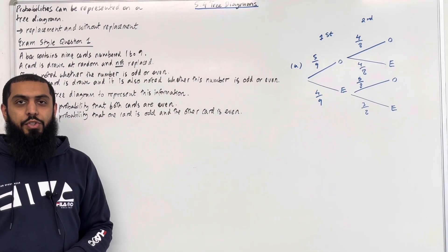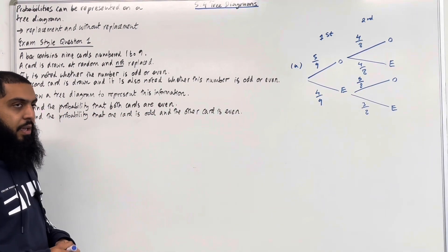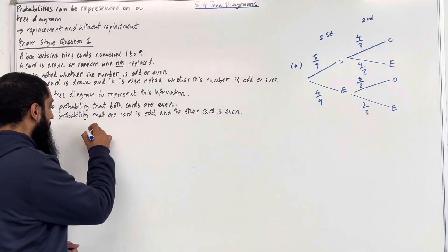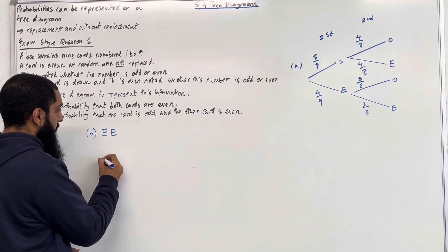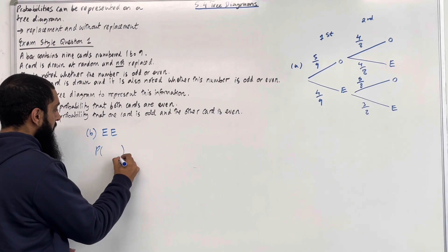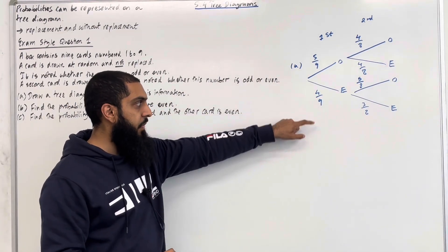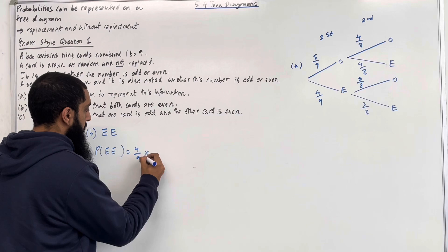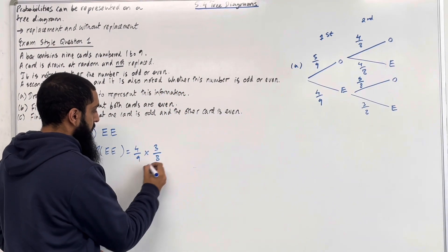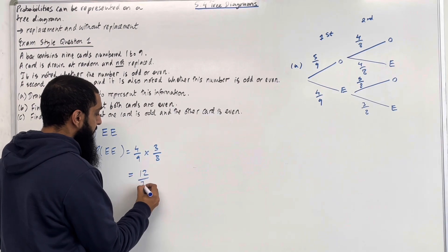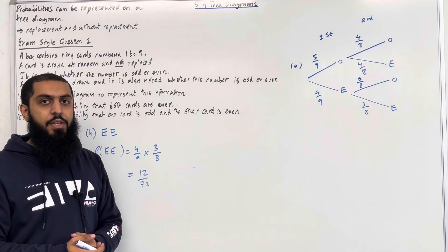Moving on to Part B of exam style question 1: find the probability that both cards are even. So we want the first card to be even and the second card to be even. The probability that both cards are even is given by the first card being even, which is 4 over 9, multiplied by the second card being even, which is 3 over 8. This gives 12 over 72. When you go across the branches, you must multiply their individual probabilities.